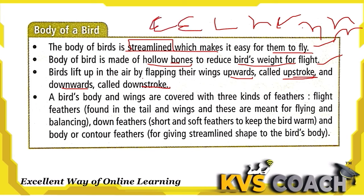A bird's body and wings are covered with three kinds of feathers. The first type is flight feathers, found in the tail and wings. These are meant for flying and balancing.